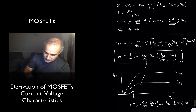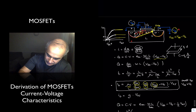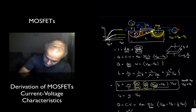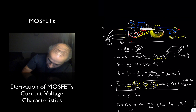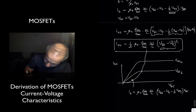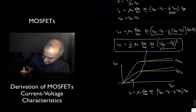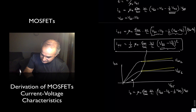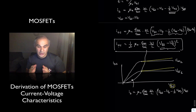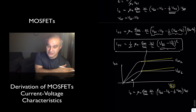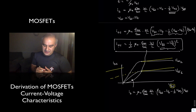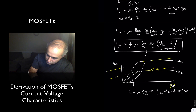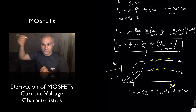As you keep increasing VDS, the depletion region keeps expanding, pinching off more of the channel, and you actually see a slight increase in current with increasing VDS — this is the channel length modulation effect, equivalent to the Early voltage in BJT transistors. Projecting these curves back, they converge at a point called VA, the Early voltage, which accounts for the fact that the output impedance looking into the drain is not infinite.